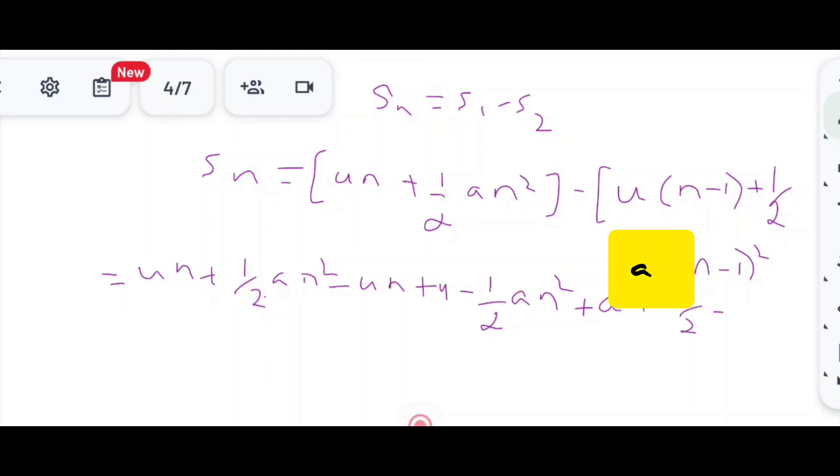Therefore, after solving, we get Sn equals U plus An minus half A. We can write this as Sn equals U plus A by 2 times 2n minus 1. This is the distance traveled during the nth second.